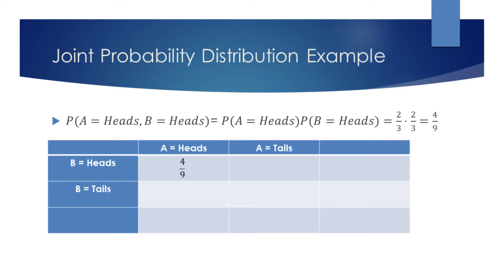Let us now find the probability for coins A and B to display heads. This outcome is denoted as P of A equals heads, comma, B equals heads. We already know the independent probabilities of the coins to display heads is two-thirds. We can find the joint probability by multiplying these individual probabilities. We then find that the probability to land both coins on heads is four-ninths.